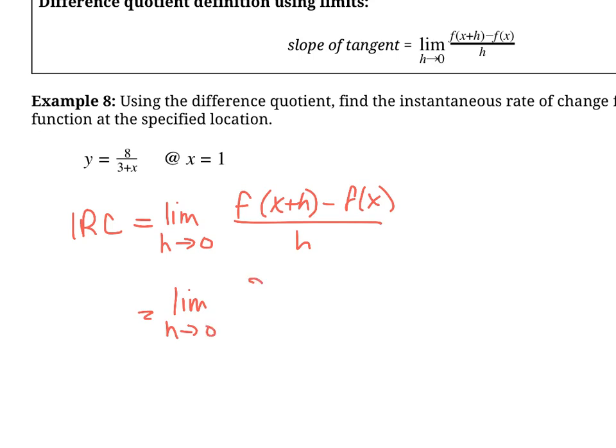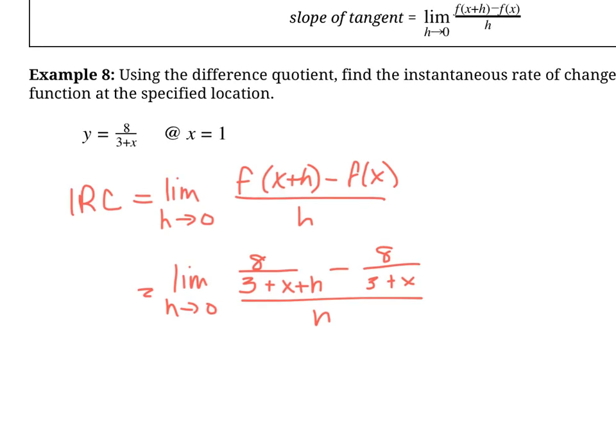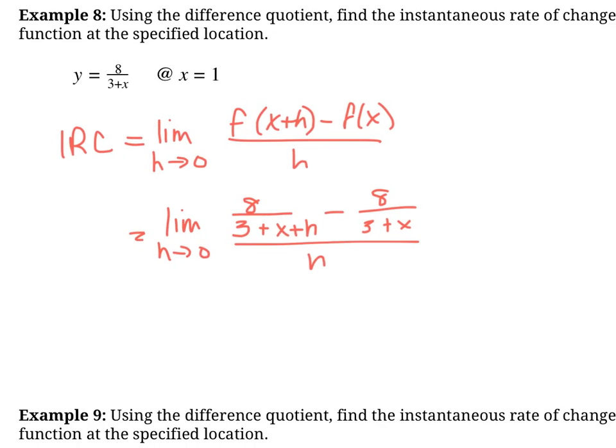So looking at our function here, we have 8 over 3 plus x plus h, right? Minus 8 over 3 plus x all over h. Okay, so we can basically do a little bit of algebra here because we can't yet plug in the value of h here because h is still in the denominator, right?